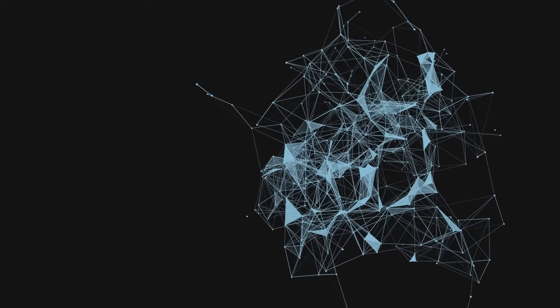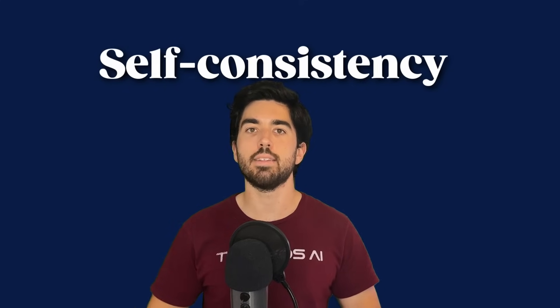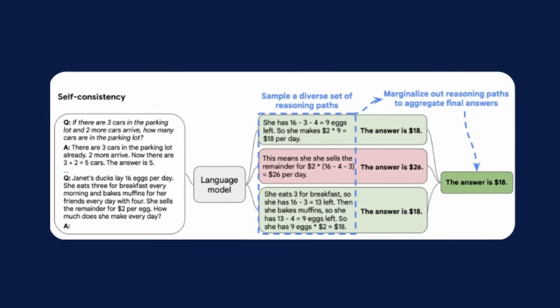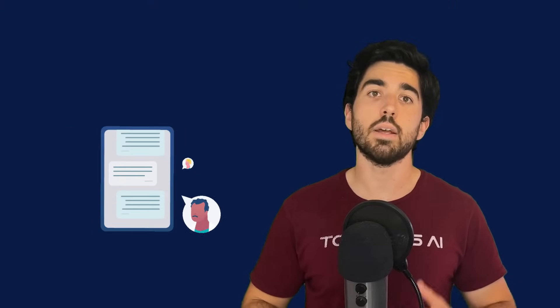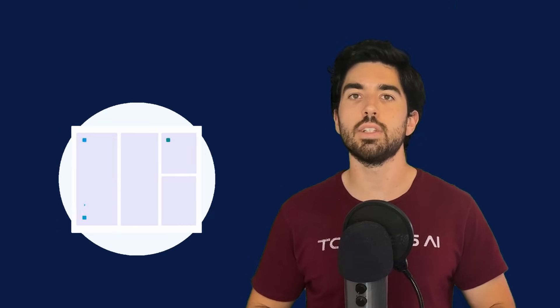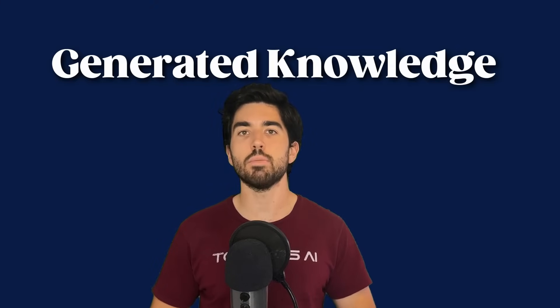Another interesting approach, discovered through Learn Prompting, is called Self-Consistency. Here, you ask the model the same question multiple times and take the most recurring answer — essentially model ensembling, but in the prompting world. Similarly, just as you'd gather facts about a topic before writing a school dissertation, you can ask an LLM to generate a few interesting facts about a specific topic and then ask it to use them to write a blog article. This approach, called Generated Knowledge, shows improvements in various common sense datasets.